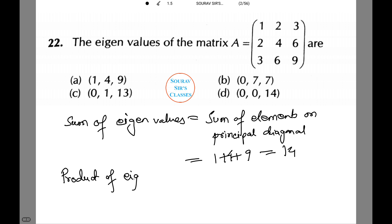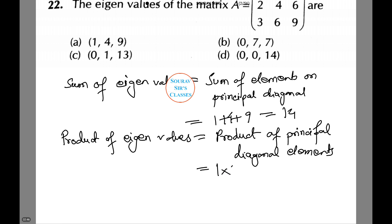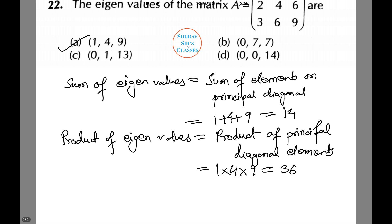The product of eigenvalues equals the product of principal diagonal elements, which equals 1 into 4 into 9, that is 36. Only option A satisfies the above two conditions, thus that is the correct answer.